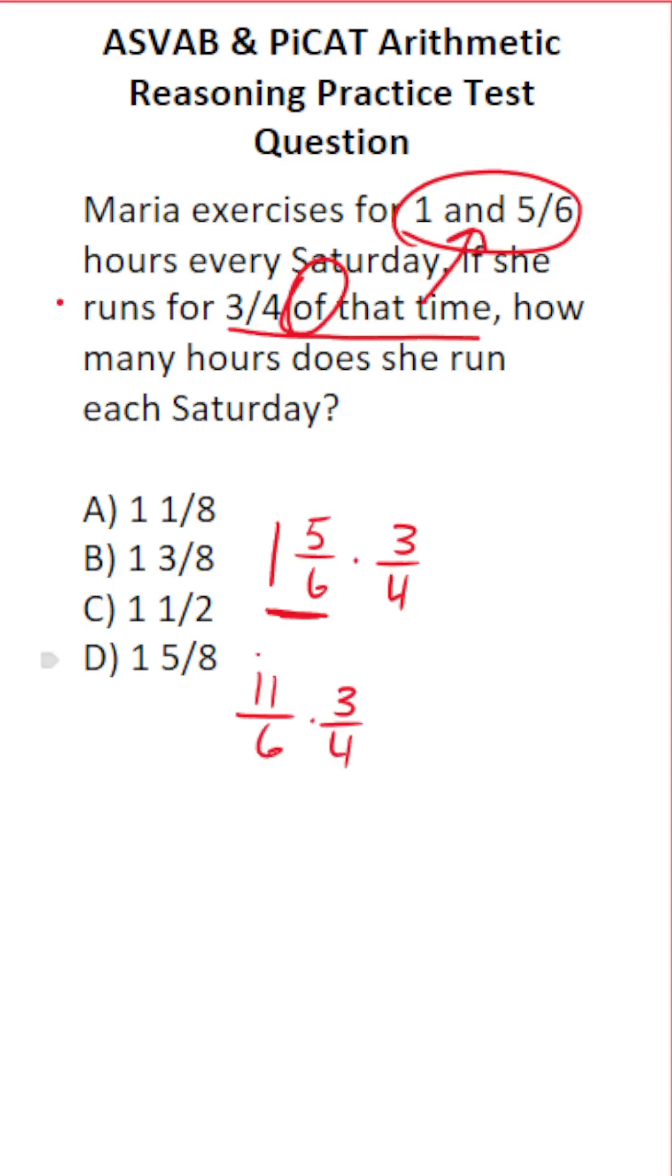When you multiply fractions, you just multiply straight across. That said, before multiplying straight across, you always want to cross-reduce to make the math as easy as possible. Three goes into three one time. Three goes into six two times. So this becomes 11 over 2 times 1 over 4.